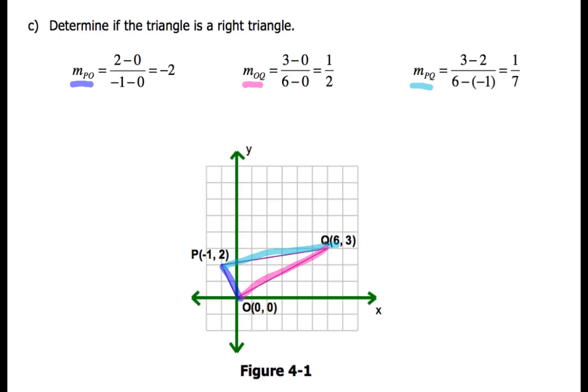Now if slopes have a product of negative one, or if slopes are negative reciprocals, then that means those two segments will form a right angle. And if they form a right angle, by golly, that means we're going to have a right triangle.